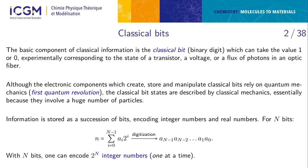A useful notation is the digitization of a number: a chain of bits can be translated into an integer. There is a one-to-one mapping between a bit string and an integer — this is called digitization. With n bits, we can encode two-to-the-power-of-n integers, one at a time. This mapping will also be useful for quantum computing.